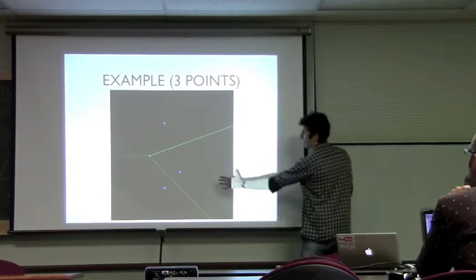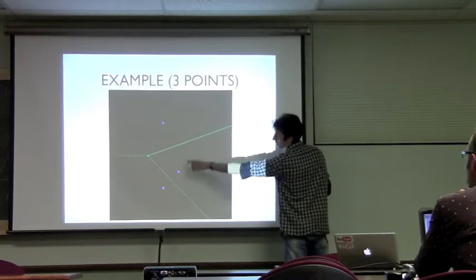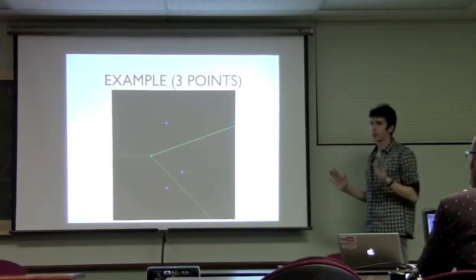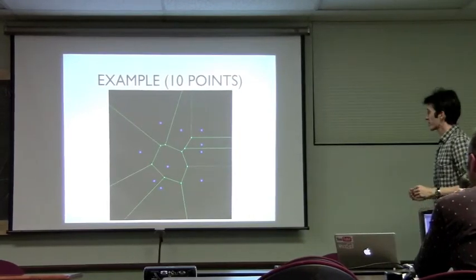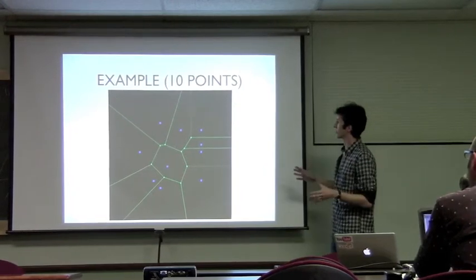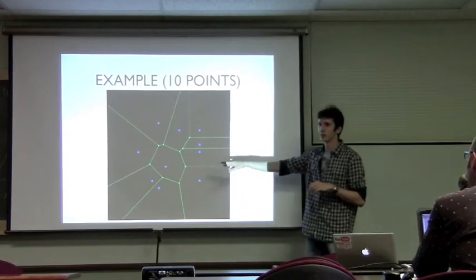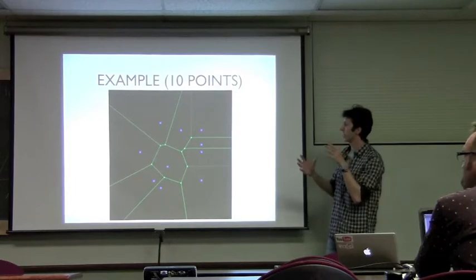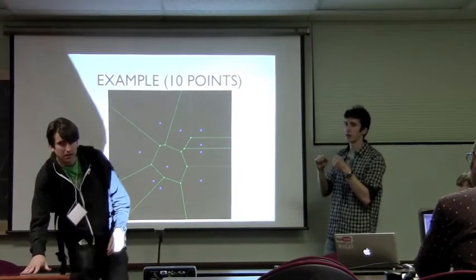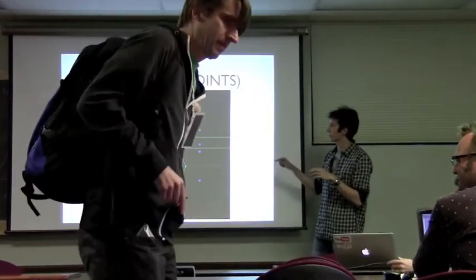All the points in a region are closer to one particular point than to any other. With many points — say ten — the point in the middle is bounded by all the others, situated inside a Voronoi cell. All points inside the corresponding circle are closer to that central point than to any other point visible.